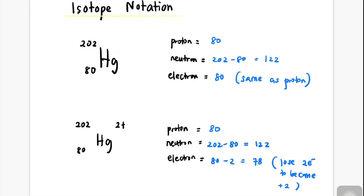But for the ion Hg²⁺, the protons remain 80, neutrons are still 122, but the electrons are minus 2 because it has become 2+ charge.